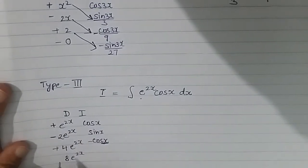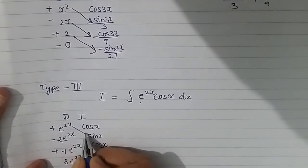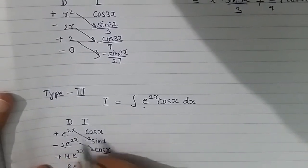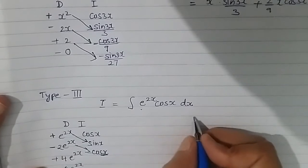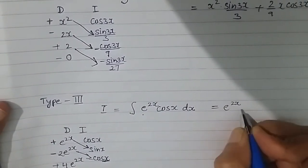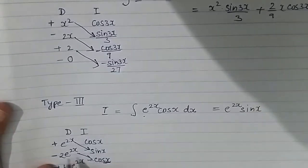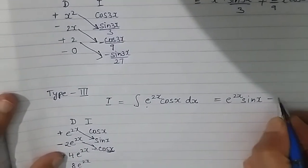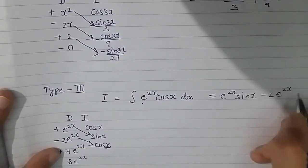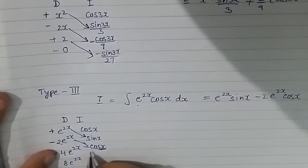I assign alternating signs: +, −, +, and stop there. Multiplying diagonally: e^(2x) · sin x, then minus 2e^(2x) · cos x — giving the terms e^(2x) sin x − 2e^(2x) cos x so far.